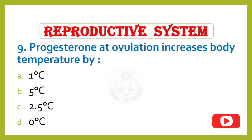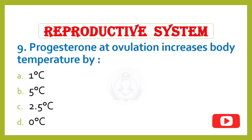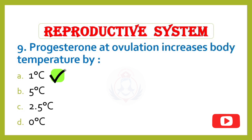Question 9. Progesterone at ovulation increases body temperature by: Option A – 1 degree Celsius, Option B – 5 degrees Celsius, Option C – 2.5 degrees Celsius, Option D – 0 degrees Celsius. Correct answer is Option A: 1 degree Celsius.